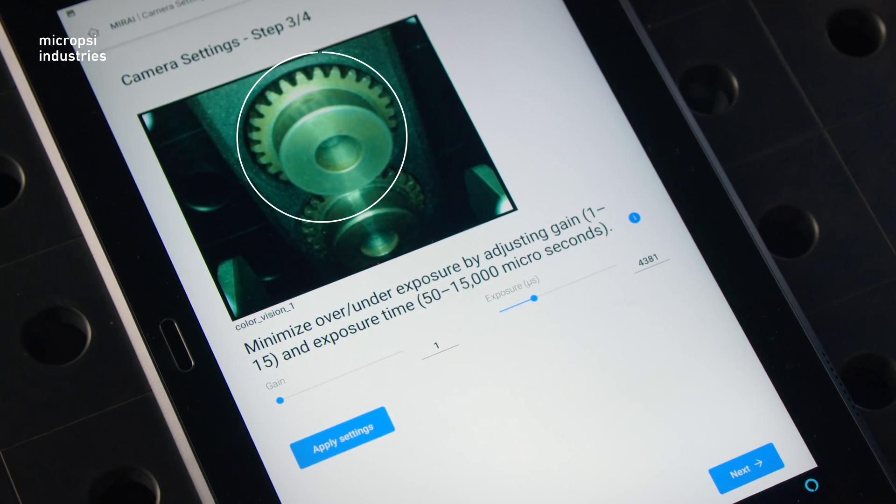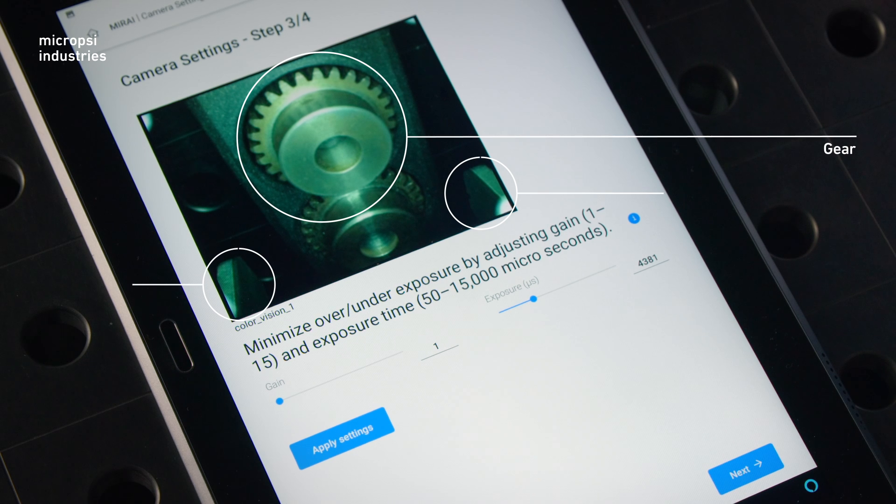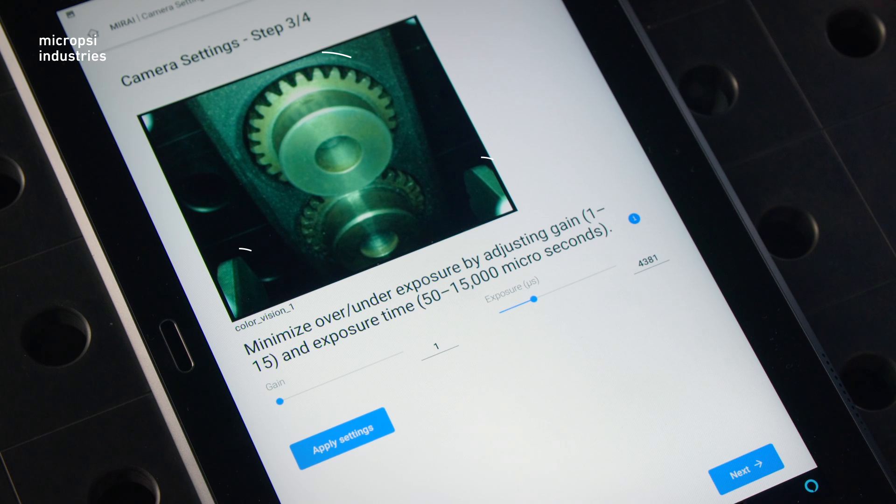Here is an example of an ideal camera image. This is the target, a gear. This is the gripper. Above all, the image illuminates what Mirai should concentrate on, the gear. The geometry of the gear and the gripper are both visible. Moreover, neither the gear nor the gripper are overexposed.